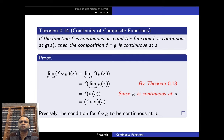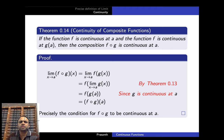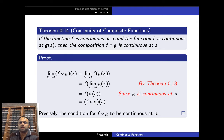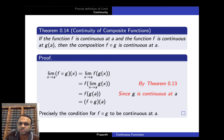For the continuity of composite functions: if g is continuous at a and f is continuous at g(a), then f∘g is continuous at a. Proof: limit x→a (f∘g)(x) = limit x→a f(g(x)). Since f is continuous, we can take the limit inside: this equals f(limit x→a g(x)) = f(g(a)) = (f∘g)(a). This is exactly the condition for f∘g to be continuous at a.